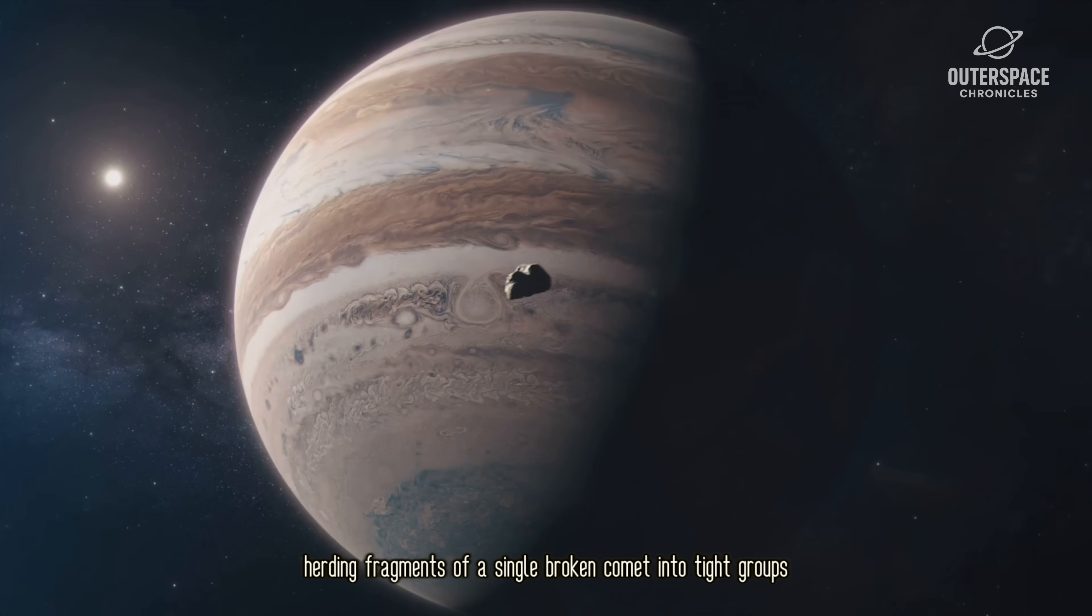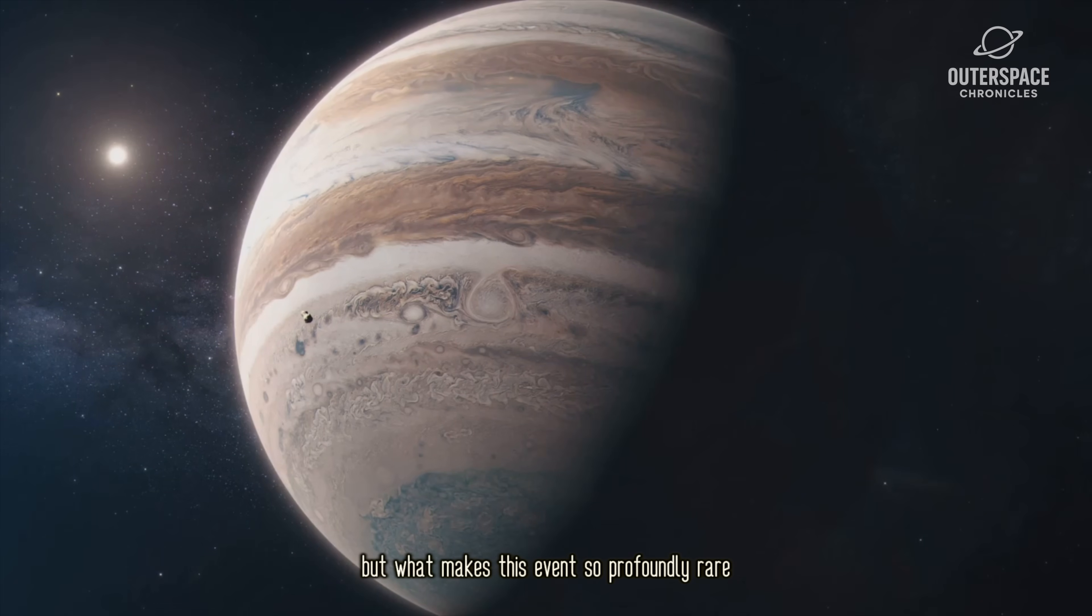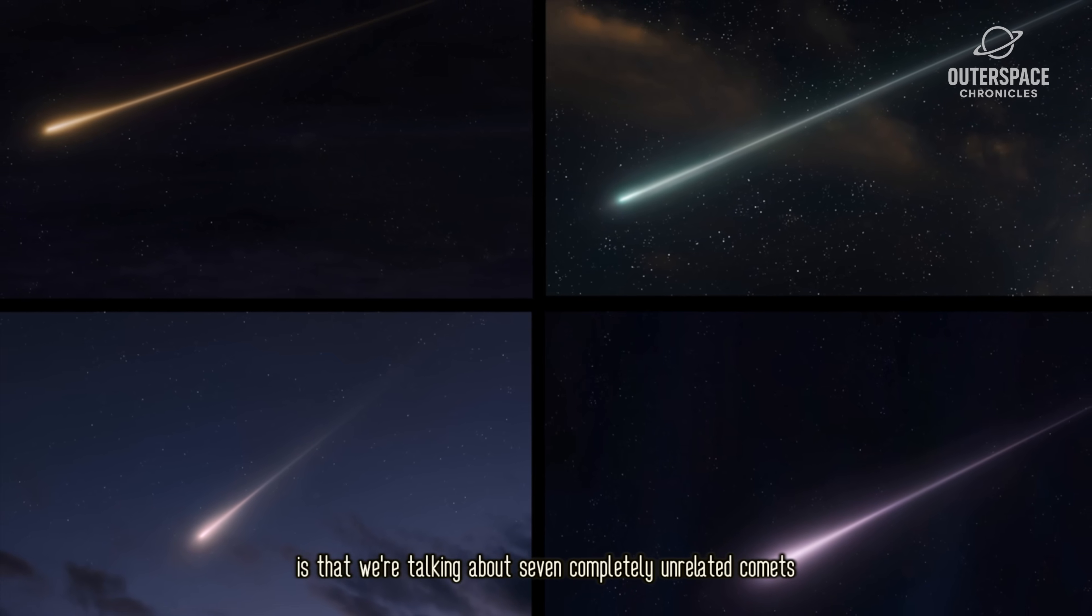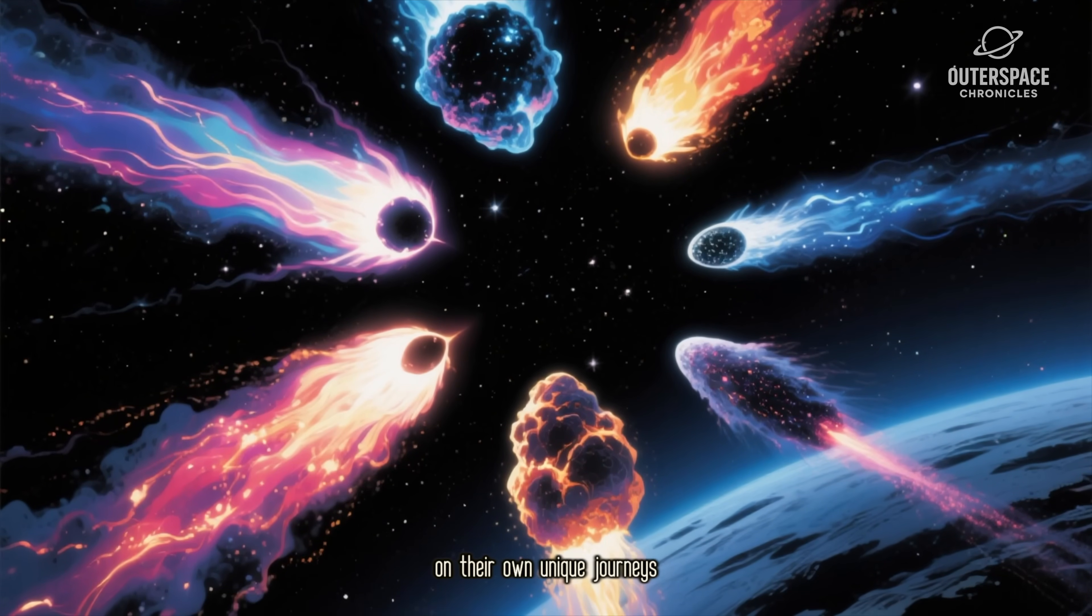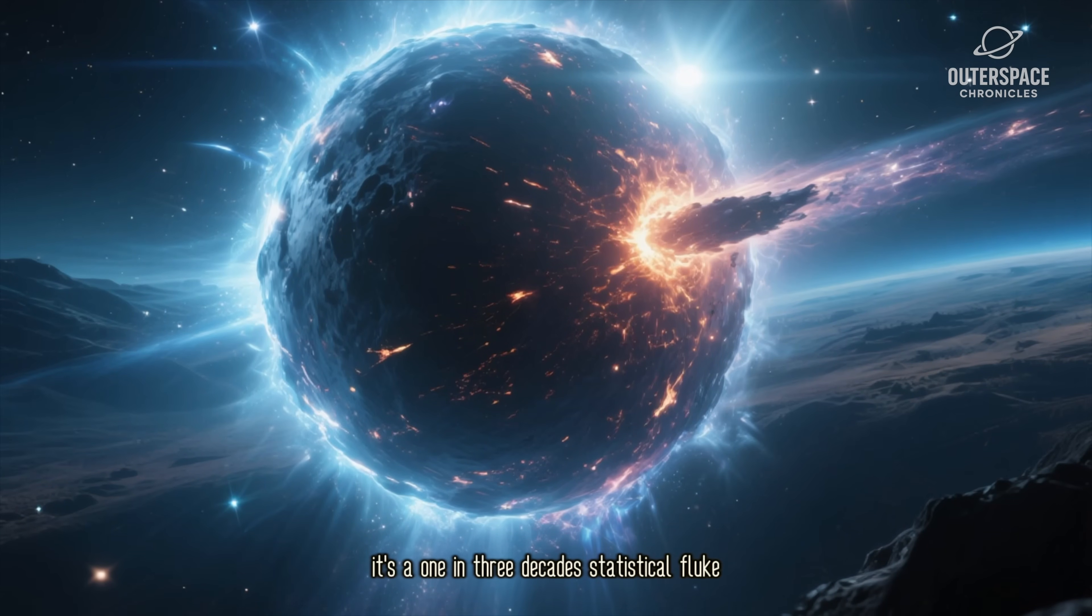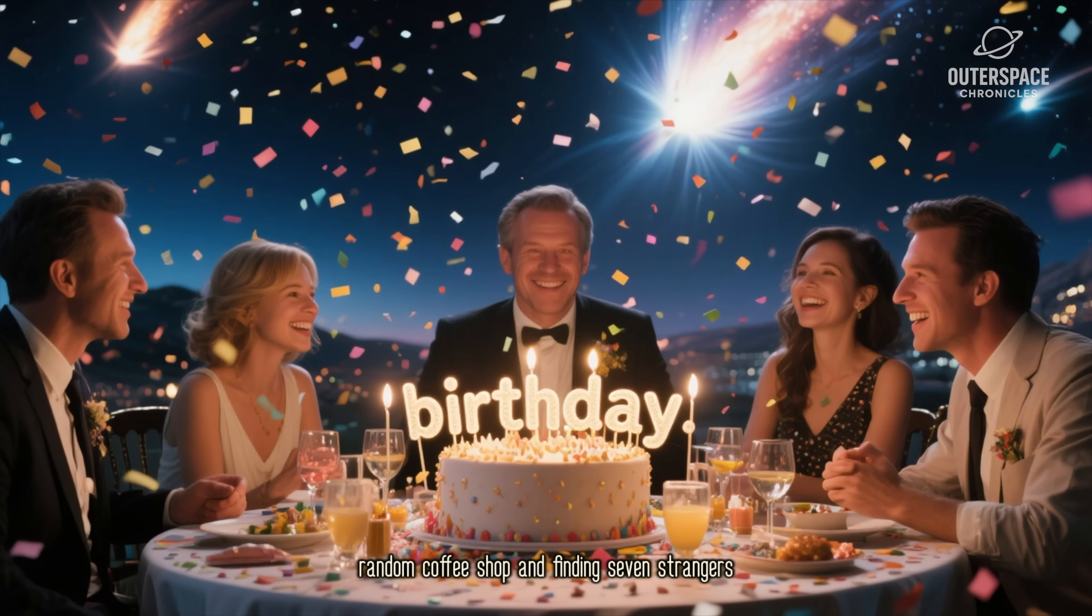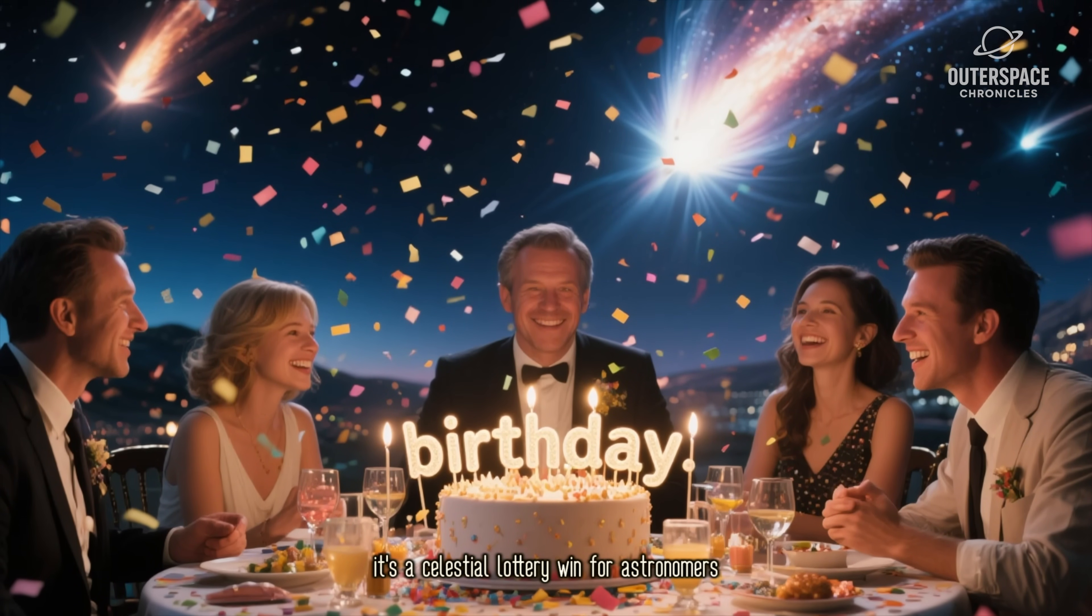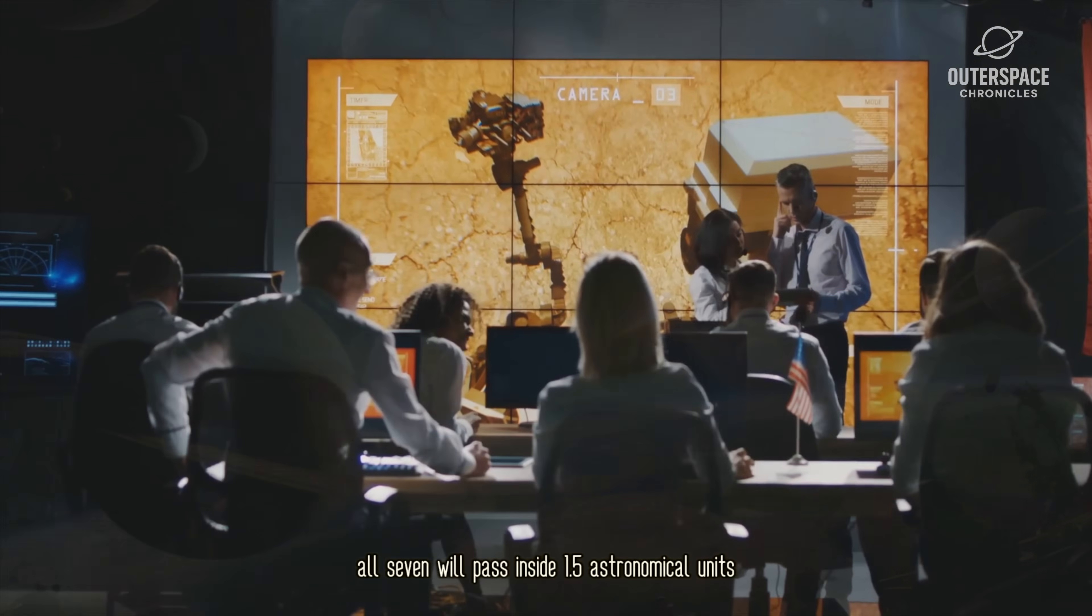Comet clusters aren't entirely unheard of. Jupiter's immense gravity can act like a cosmic sheepdog, herding fragments of a single broken comet into tight groups. But what makes this event so profoundly rare is that we're talking about seven completely unrelated comets. They don't know each other. They're from different parts of the solar system on their own unique journeys, all arriving within a single month. This isn't a family reunion, it's a one in three decades statistical fluke.